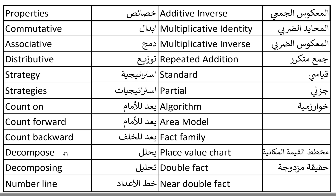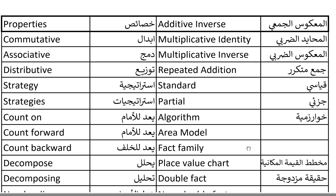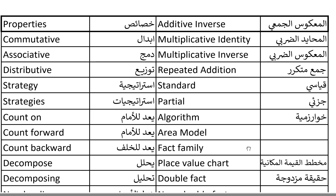Decompose. Decompose. Decomposing. Decomposing. Number line. Number line. Additive inverse. Additive inverse. Multiplicative identity. Multiplicative identity. Multiplicative inverse. Multiplicative inverse. Repeated addition. Repeated addition. Standard. Partial. Partial. Algorithm. Algorithm. Area model. Area model. Fact family. Fact family. Place value charts. Place value charts. Double fact.